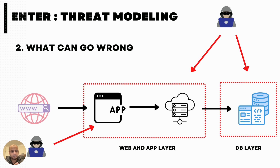One thing to remember: there is no right or wrong way when you're starting out — you're just visualizing and brainstorming. Start with all those external entities. Think about which external entities can access the system. There's a browser here — it's accessing the web application. What is stopping somebody else from trying to access that application?